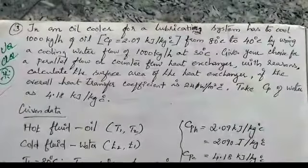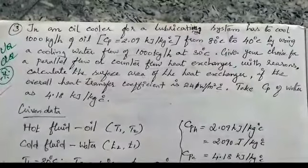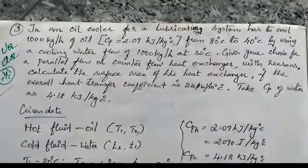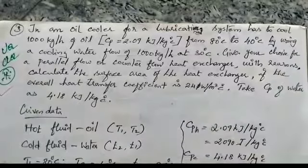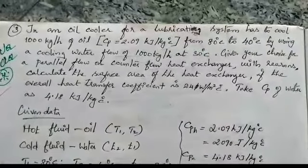The overall heat transfer coefficient is 24 Watt per m² degree Celsius. Take the CP of water as 4.18 kJ per kg degree Celsius. Here we choose the type of heat exchanger.